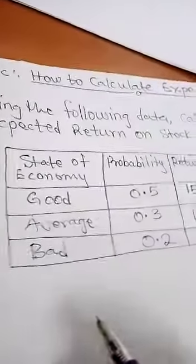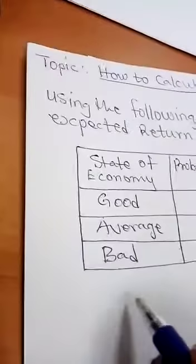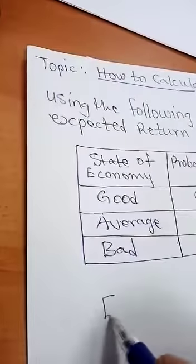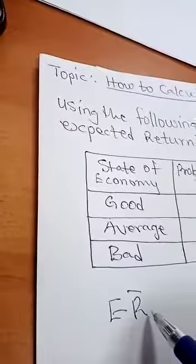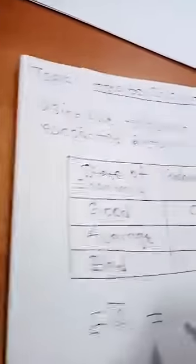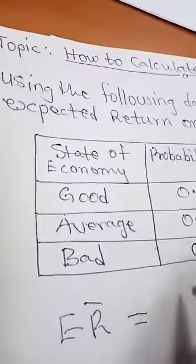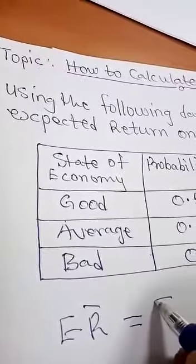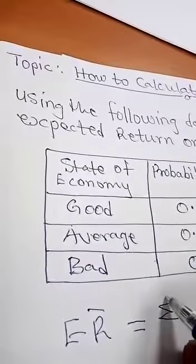So, expected return on any investment is simply equals to the summation, this is N, I, is equals to from 1 to N.